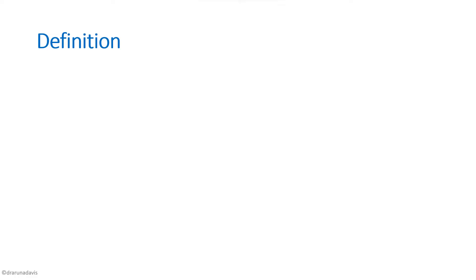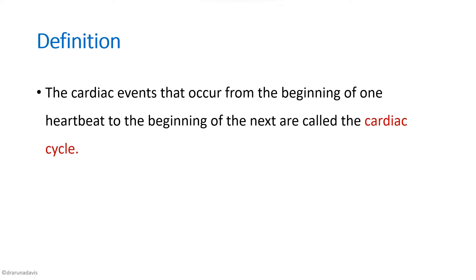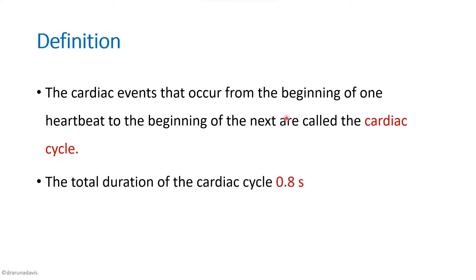When such a question is asked, first you have to start with the definition. A cardiac cycle is defined as the cardiac events that occur from the beginning of one heartbeat to the beginning of the next. The total duration of a cardiac cycle is 0.8 seconds, assuming a normal heart rate of 72 beats per minute.